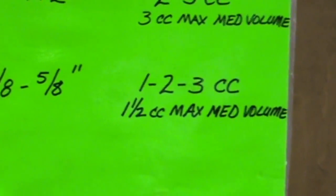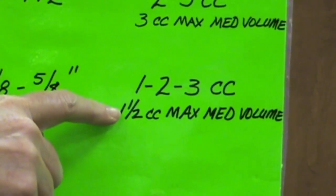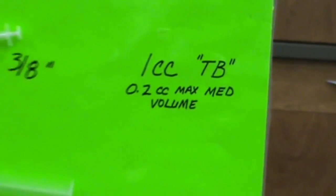So if you remember that IM is three, sub-q is half of three, one and a half, and then your intradermal is 0.2.